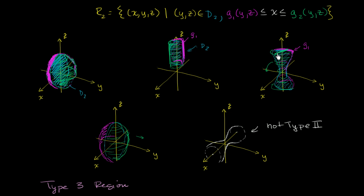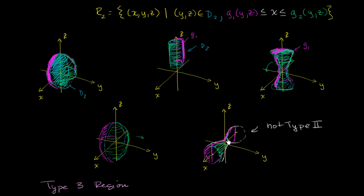By the same logic, this hourglass can also be a type 3 region. The front side — the upper bound on y — would be the front half, and the back side would be the back half in terms of y. The boundary of the domain would be this cross-section right over here. The lower bound on y would be the back half of this hourglass, and the upper bound on y would be the front half.